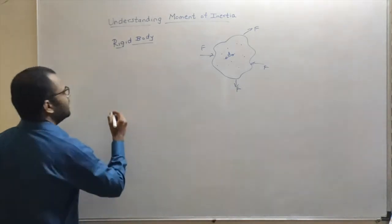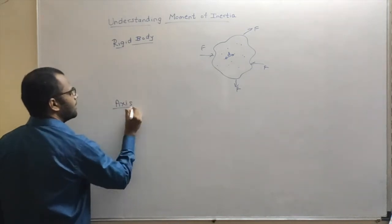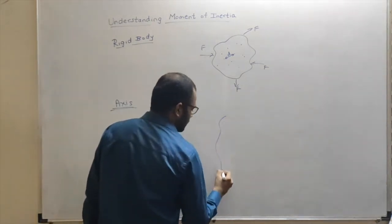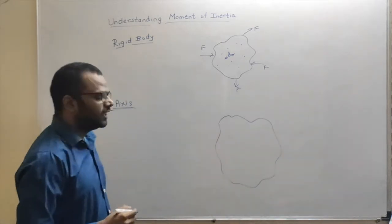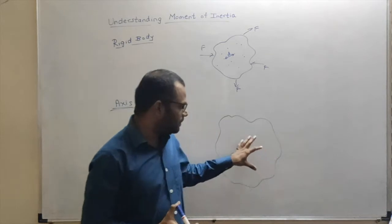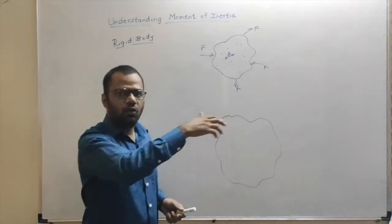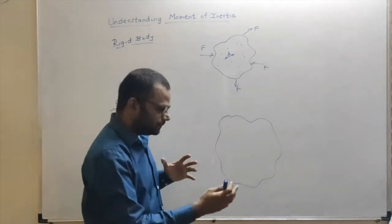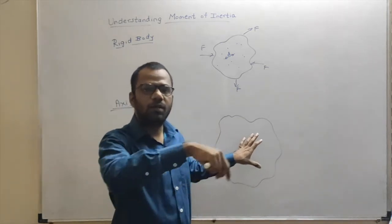The next thing we need to understand is the axis of rotation. Since we are going to study rotational motion, we need to know what the axis of rotation is. Suppose this is some random three-dimensional body that is rotating. As the body rotates, the particles of the body will perform circular motion.